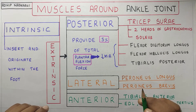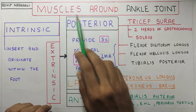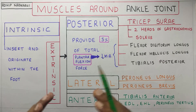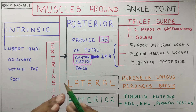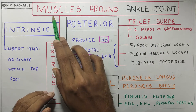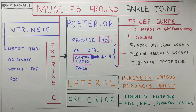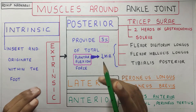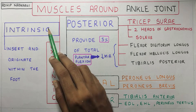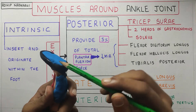In this video we are going to talk about the kinetics of the ankle joint, or the muscles around the ankle joint. Kinetics is basically the force that is causing the movement at your ankle joint, and this force is produced by the muscles. These muscles are divided into two parts: the intrinsic muscles and the extrinsic muscles.